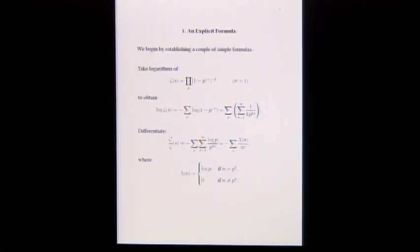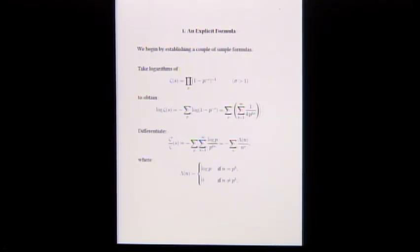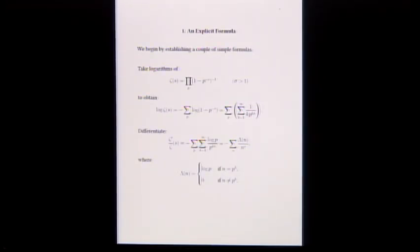Now differentiate — the series is absolutely convergent uniformly. So zeta prime over zeta, the logarithmic derivative of zeta, is minus log p, and a k comes out and cancels, giving you this. You can write this using the von Mangoldt function lambda of n, which is log p if n is p to the k and zero otherwise. So zeta prime over zeta has a Dirichlet series expansion that looks like this, where the lambda n's are log p's.